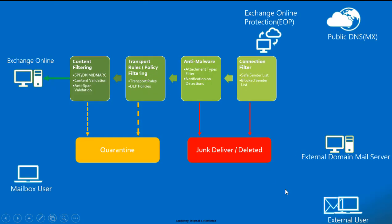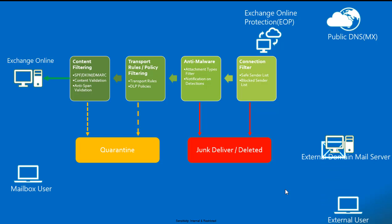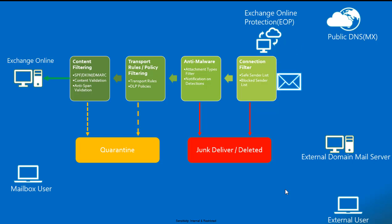Consider an external user composing an email for your domain user and sending it to their mail server. Their mail server resolves the MX record from the public DNS, detects it points to Exchange Online Protection, and delivers the mail to EOP. Once Exchange Online Protection receives the email, it immediately begins scanning. First, the mail goes to the connection filter, where IP address validation and sender reputation are checked.